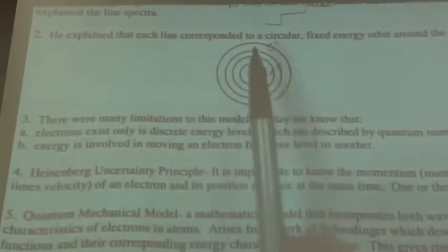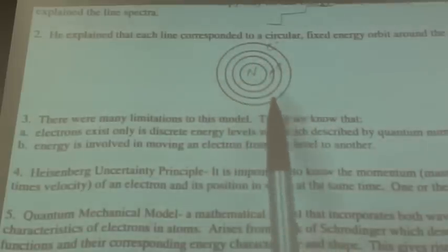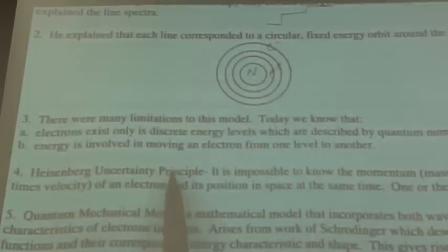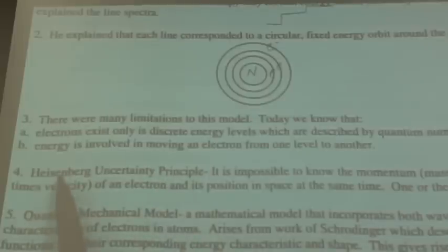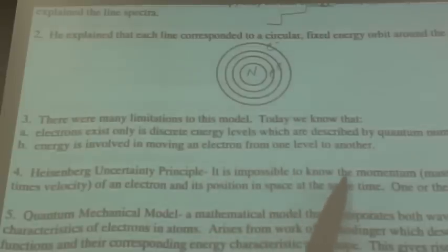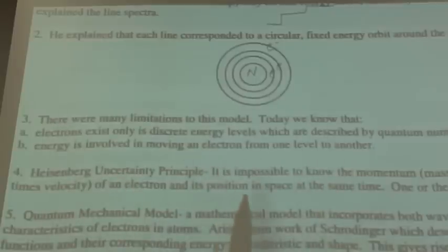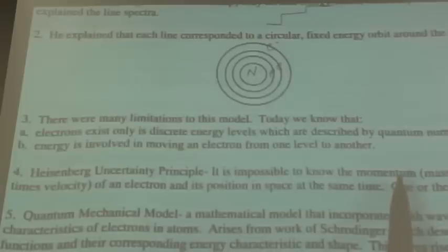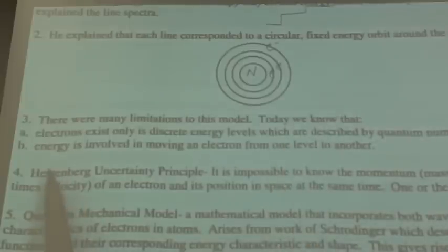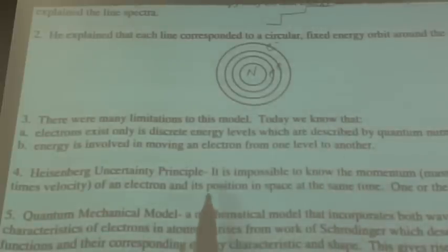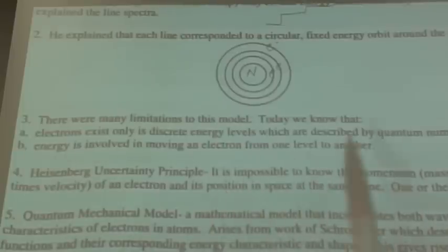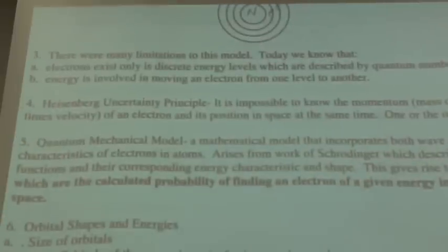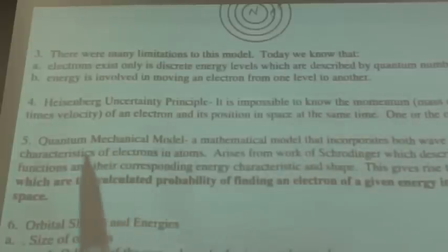About the same time, the Heisenberg Uncertainty Principle was talked about. Mr. Heisenberg said that it's impossible to know the momentum of an electron and its position in space at the same time. If you test one variable, it changes the other. So the bottom line is, you cannot know the momentum at the same time you know where the electron is.